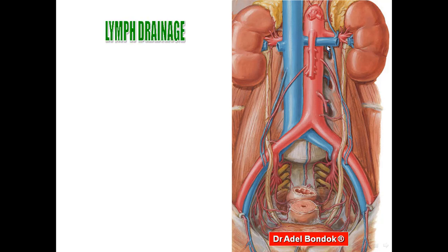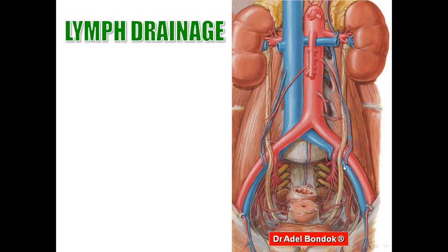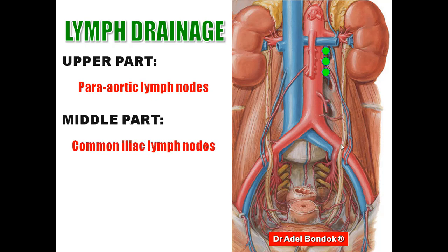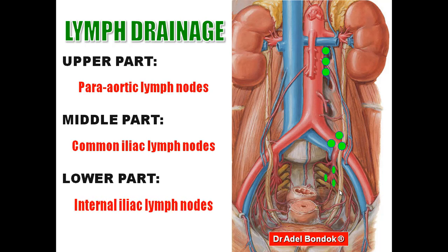Regarding lymphatic drainage of the ureter: the upper part drains into para-aortic lymph nodes, the middle part drains into common iliac lymph nodes, and the lower part drains into internal iliac lymph nodes.